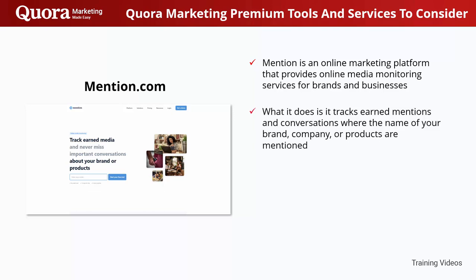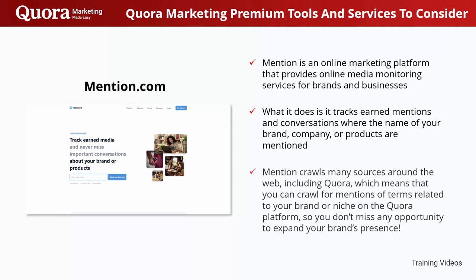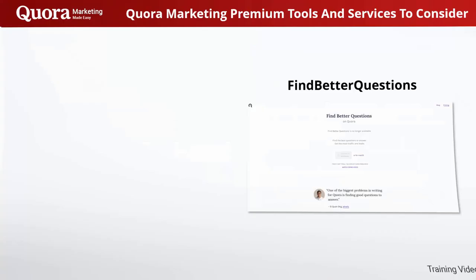Mention.com is an online marketing platform that provides online media monitoring services for brands and businesses. What it does is track earned mentions and conversations where the name of your brand, company, or products are mentioned. Mention crawls many sources around the web, including Quora, which means you can crawl for mentions of terms related to your brand or niche on the Quora platform, so you don't miss any opportunity to expand your brand's presence.